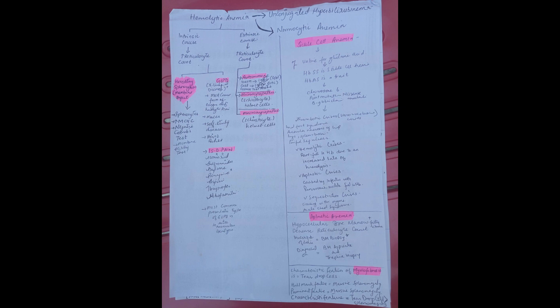That is repeatedly asked in the MCQs. Aplastic crisis that is caused by infection with parvovirus, and sequestration crisis that is sickling within the organs. And that is acute chest syndrome. Now let's talk about aplastic anemia.